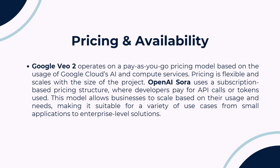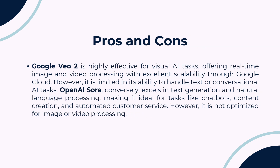Each platform has its strengths and weaknesses. Google VO2 is great for visual AI tasks, offering powerful image recognition and real-time video processing. However, it's limited when it comes to text-based applications. OpenAI Sora excels in text generation, making it perfect for conversational AI and content automation, but it doesn't handle image or video tasks effectively.